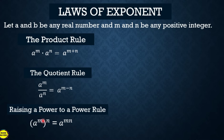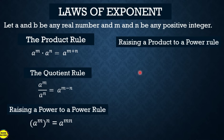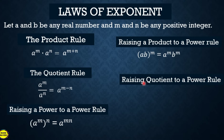Another is raising a product to a power rule: the quantity of a times b raised to m equals a raised to m times b raised to m — the outside exponent is distributed. Raising a quotient to a power rule: the quantity a over b raised to m equals a raised to m over b raised to m. These were studied in Grade 7 and Grade 8.